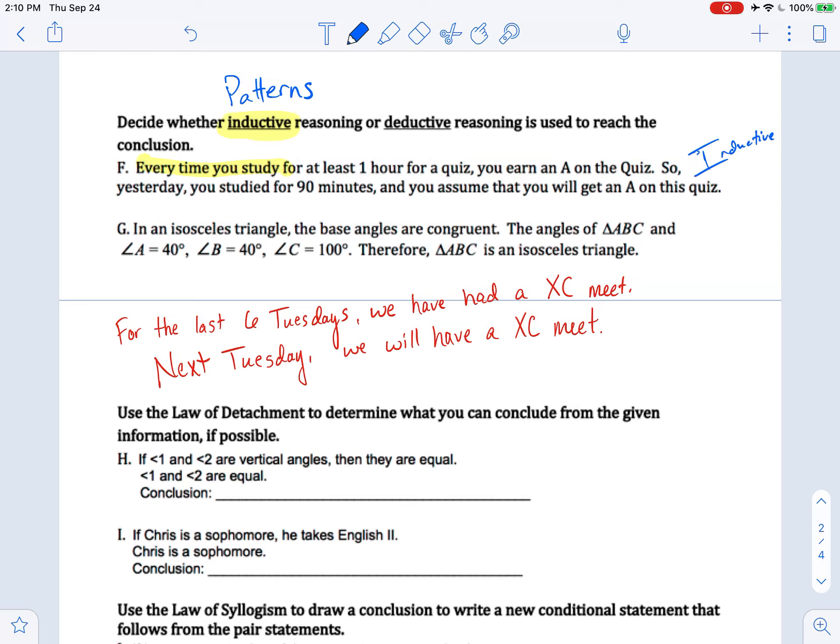And let's look at our law of detachment and law of syllogism. So H, if one and two are vertical angles, then they are equal. One and two are equal, so what can I conclude?